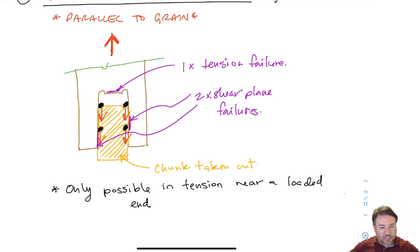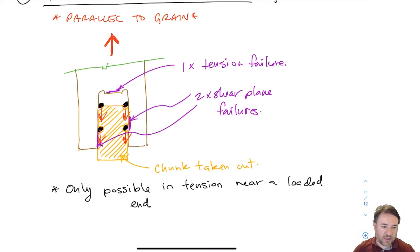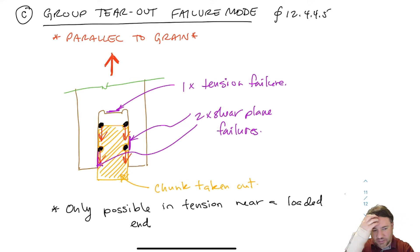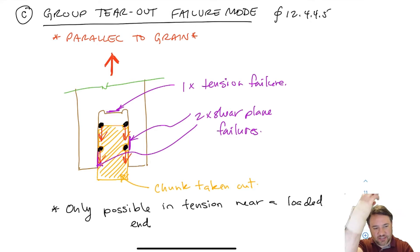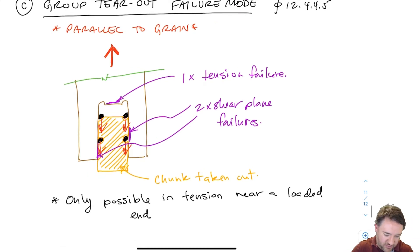Unlike row shear, I can't get group tear out in both directions. If I'm pulling on the member so the bolts want to pull out toward the loaded end, that's when I can get group tear out. But if I'm pushing and the bolts are bearing into the middle of the member, I can't have group tear out — I can't tear a piece out in that direction. So I only have to worry about this failure mode for loads parallel to grain that are pulling toward a loaded end.